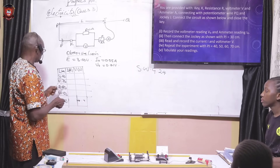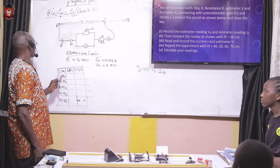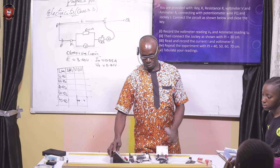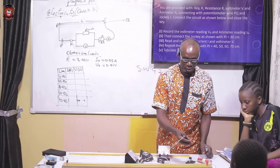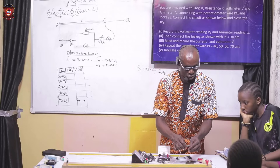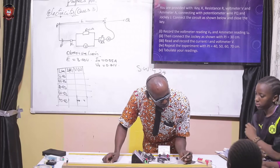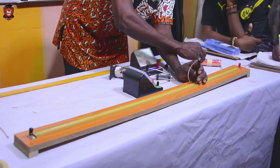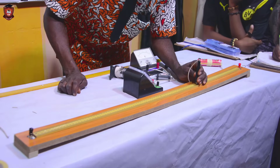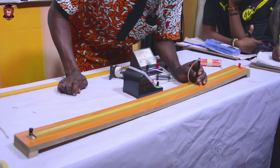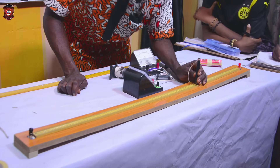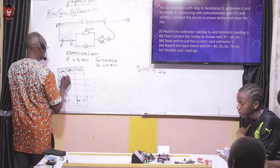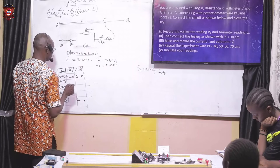We are asked to obtain the values of I and V for 30 cm. Move the jockey to 30 from the left, not from the right. The length of the wire is not too long, so we locate 30 and place the jockey at exactly 30. Close the key and take the reading: the ammeter reads 0.20 and the voltmeter reads 0.10. That's for 30 cm.